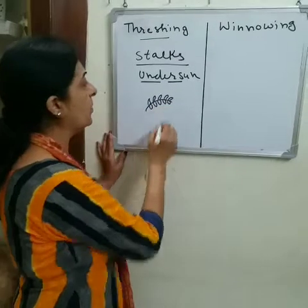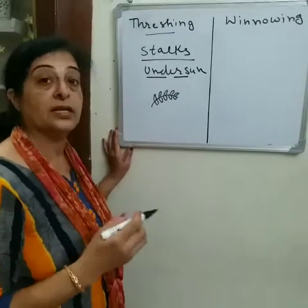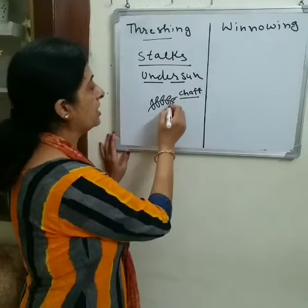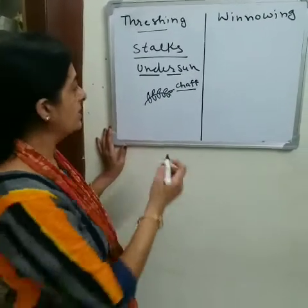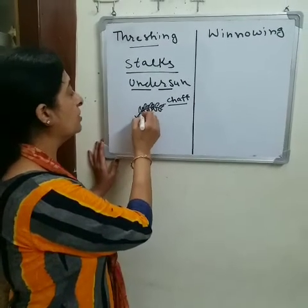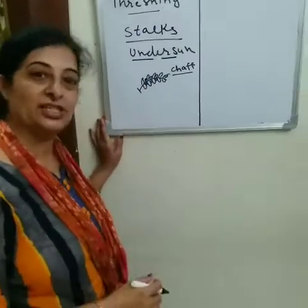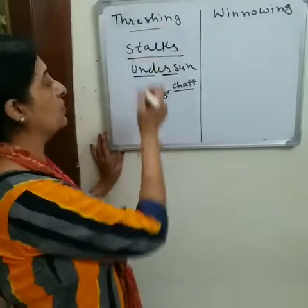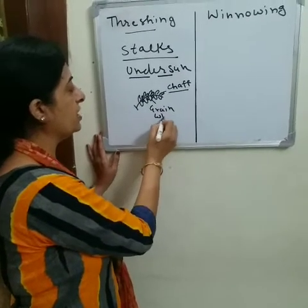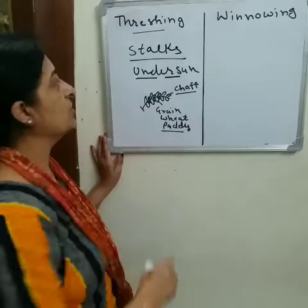Each stalk has a number of grain seeds attached to it, and each grain seed is covered with a thin layer. This thin layer is known as chaff. So each seed is covered with a thin layer, and there are a number of grain seeds attached to a stalk. The process of separating these grain seeds from the stalk is known as threshing.